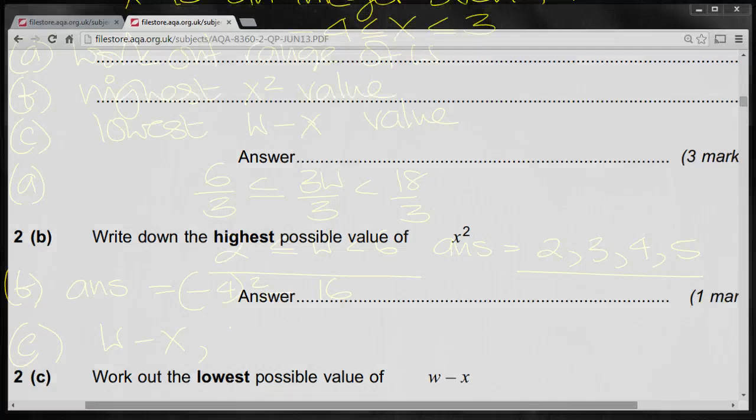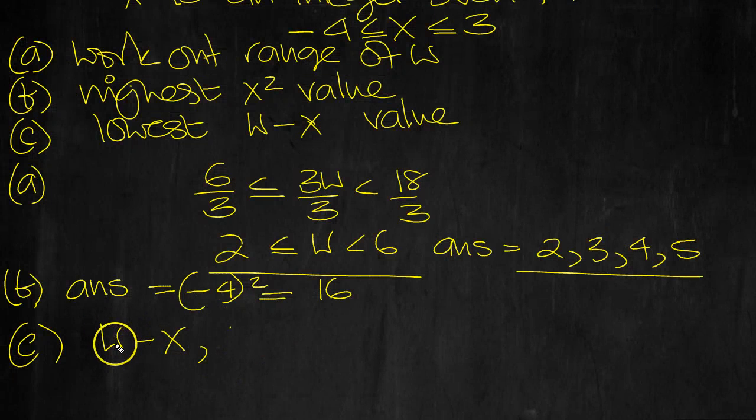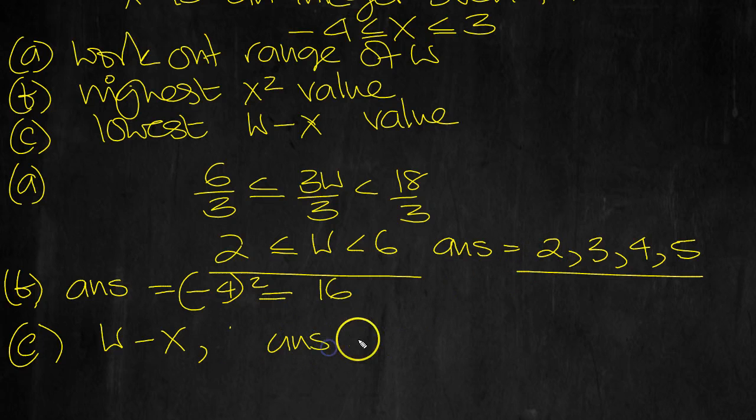Lowest possible value of w minus x. So that would be when w is lowest, which would be 2. And x is largest, isn't it? Because you're taking it away. So minus x. When is x largest? It's at 3. So take 3 away. Minus 1.